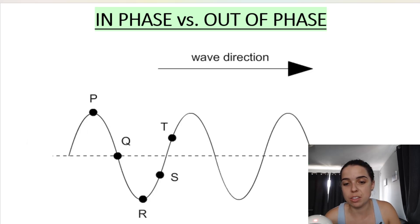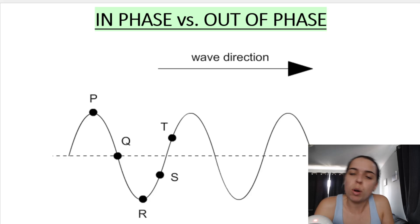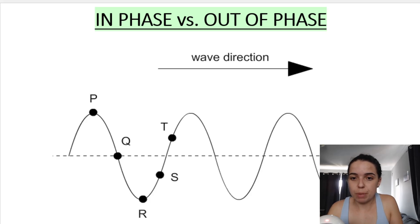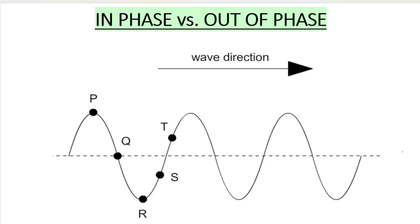Let me show you this diagram to illustrate it. This is the best way to show what in phase and out of phase means, and how to find one complete wave. P is a crest, and this over here is also a crest — I'll call it P with a little line — just to show you that those are in phase.